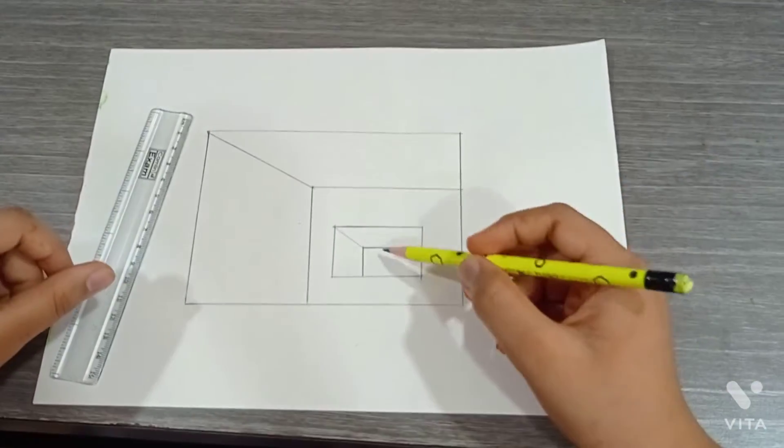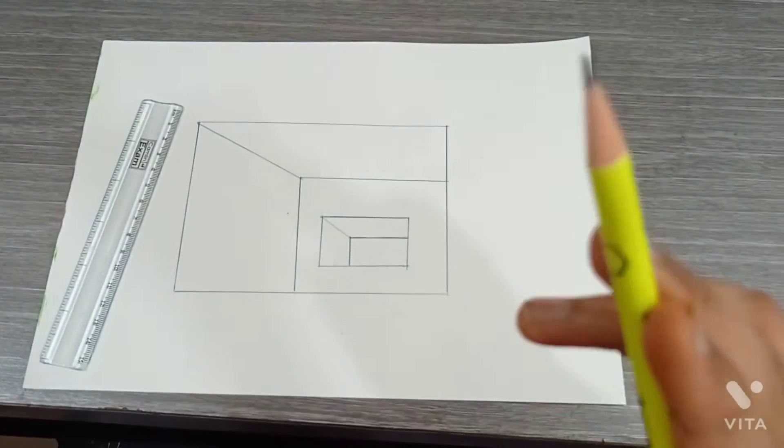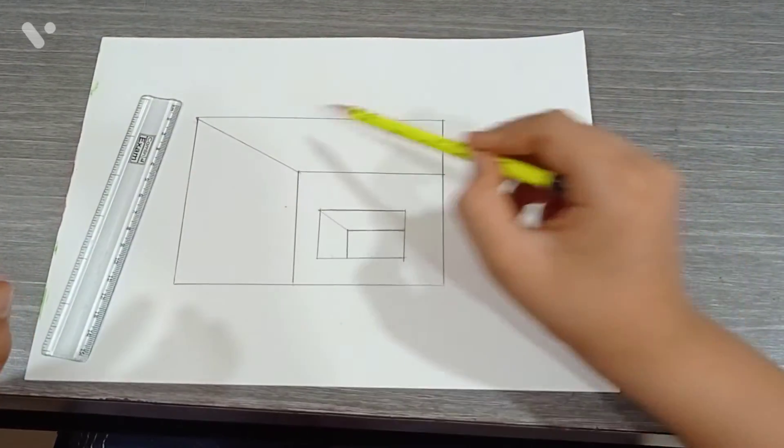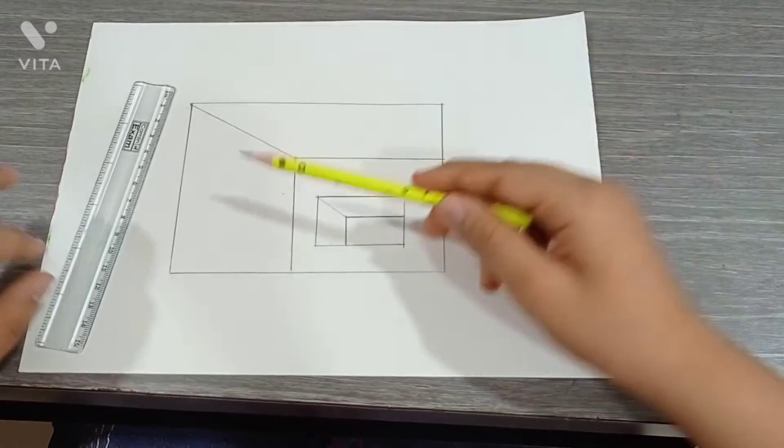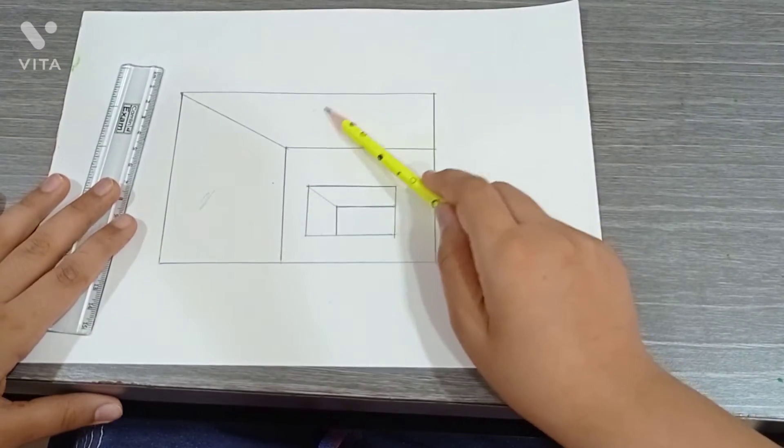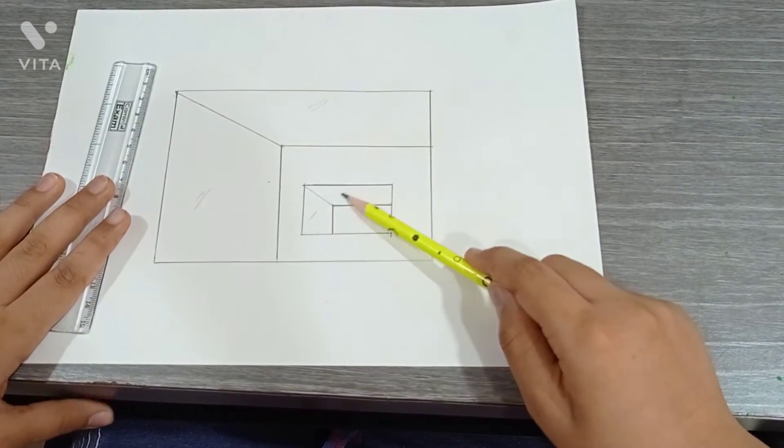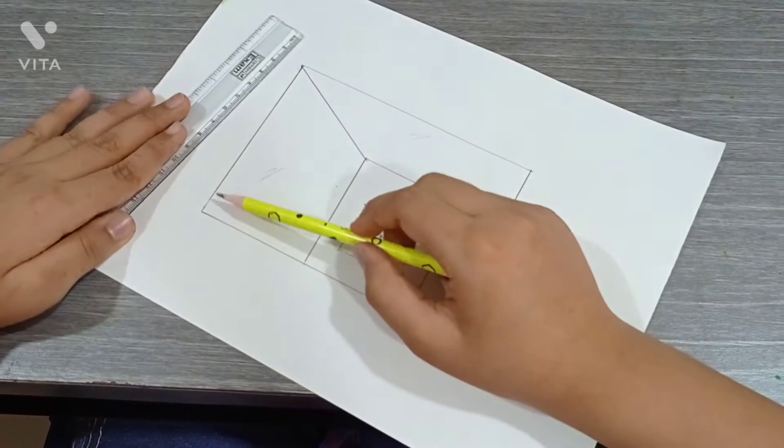As you can see, this is done. Now we have to set this portion, this one and this one, and this one portion. I'll start doing it.